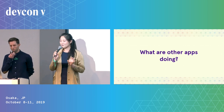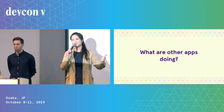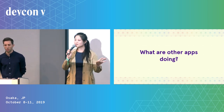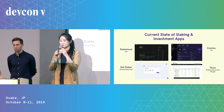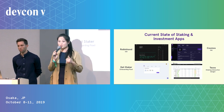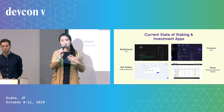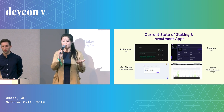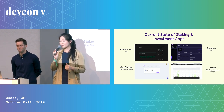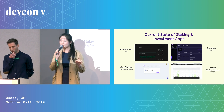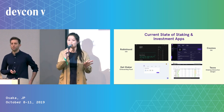A second category of information we looked at is what are all the other apps doing, because we don't want to reinvent the wheel. Some apps we looked at are Cosmos and Tezos, plus other major staking apps. We also looked at investment apps, which are relevant to what our users are already familiar with. We examined the UI, the onboarding flow, the information architecture, and the staking interactions.